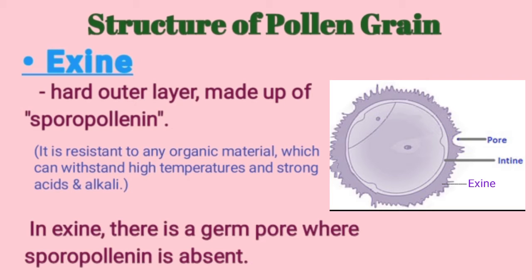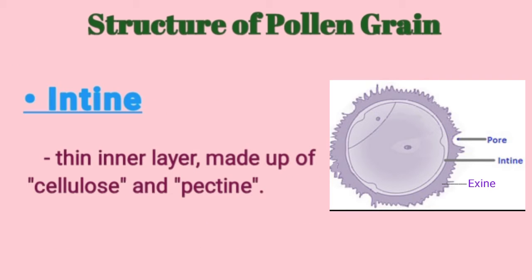Sporopollenin can also withstand strong alkali. In the exine, we can also find the germ pore — in the germ pore region the sporopollenin is absent. Intine is a thin inner layer made up of cellulose and pectin. The intine layer is thin compared to the exine and is very smooth.